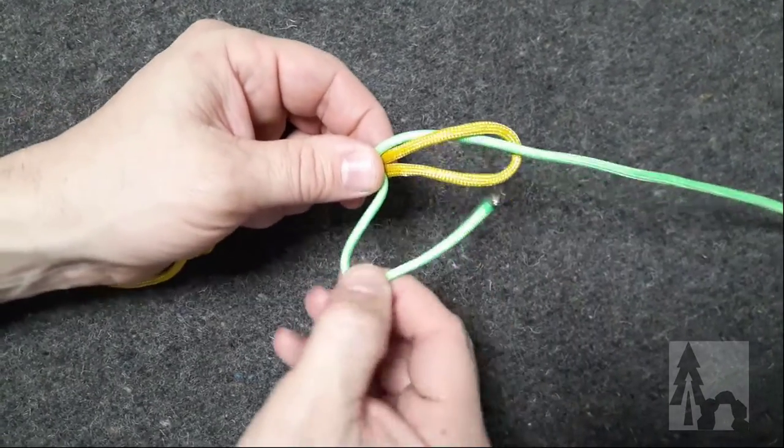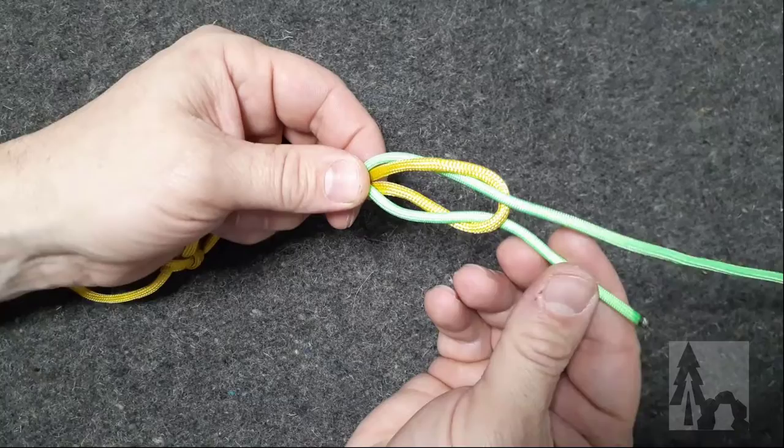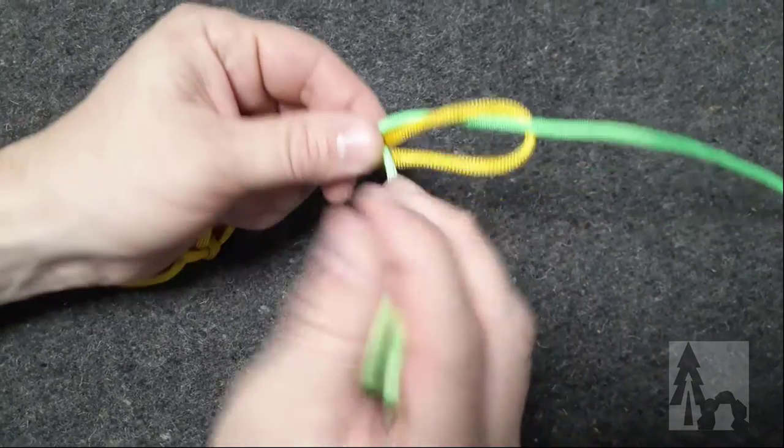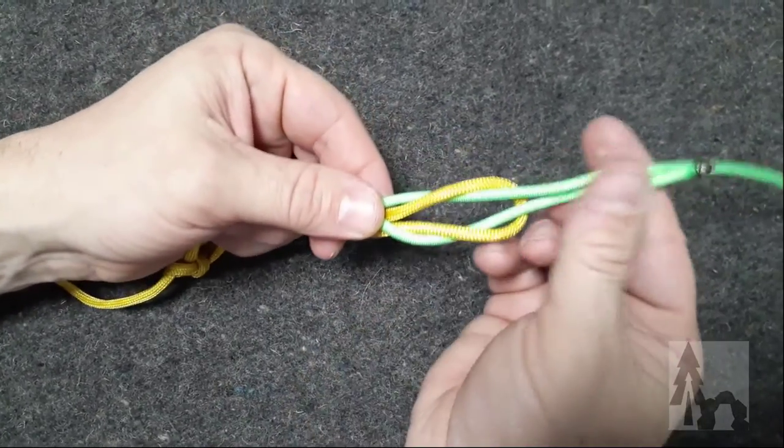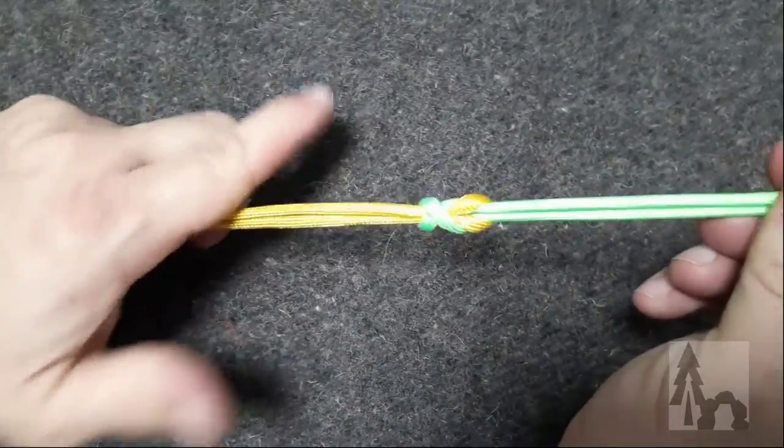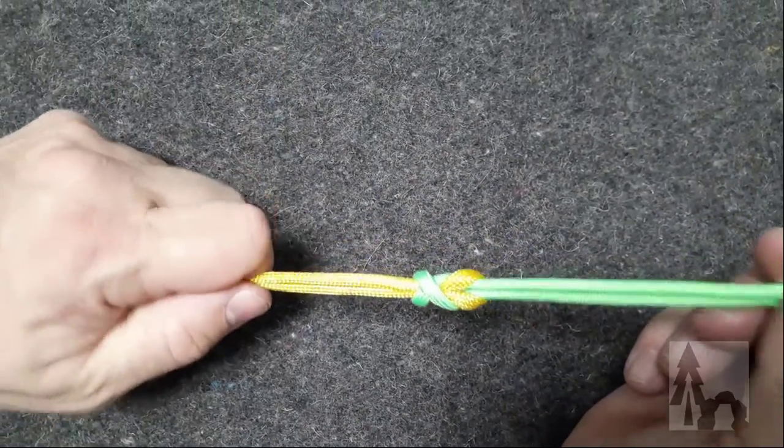And then I'll come from below the loop to exit, so that I have the two lines parallel. If you end up with the line on opposite sides of that loop, you've gone wrong somewhere. So exit through, so they're parallel. Pull that down, and I've got my simple Simon.